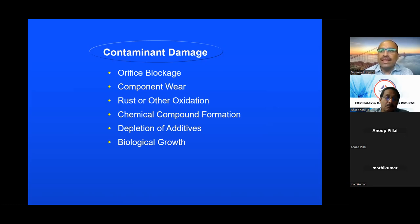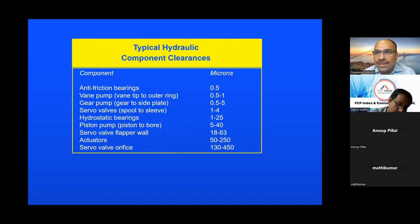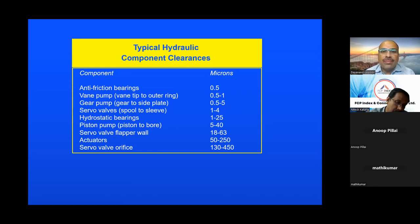The additives in hydraulic oil start getting depleted as contamination increases, leading to disposal of the hydraulic oil. There is also biological growth in hydraulic oil. Just for reference, the clearances in different hydraulic system components: anti-friction bearings have clearances of 0.5 microns, vane pumps up to 1 micron, servo valves 1 to 4 microns, and piston pumps around 5 to 40 microns. These are the micron ratings of orifices we are talking about in hydraulic systems.